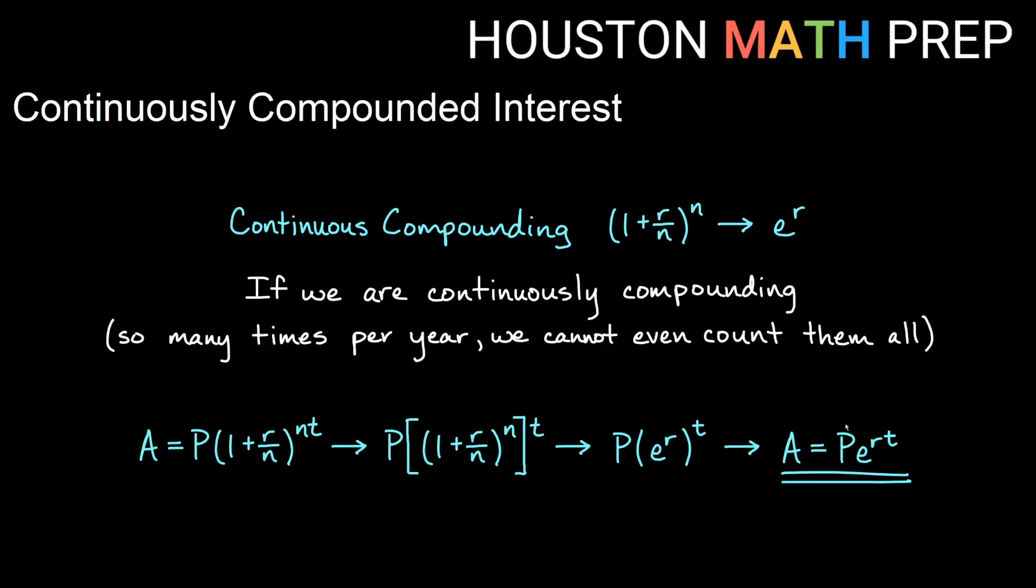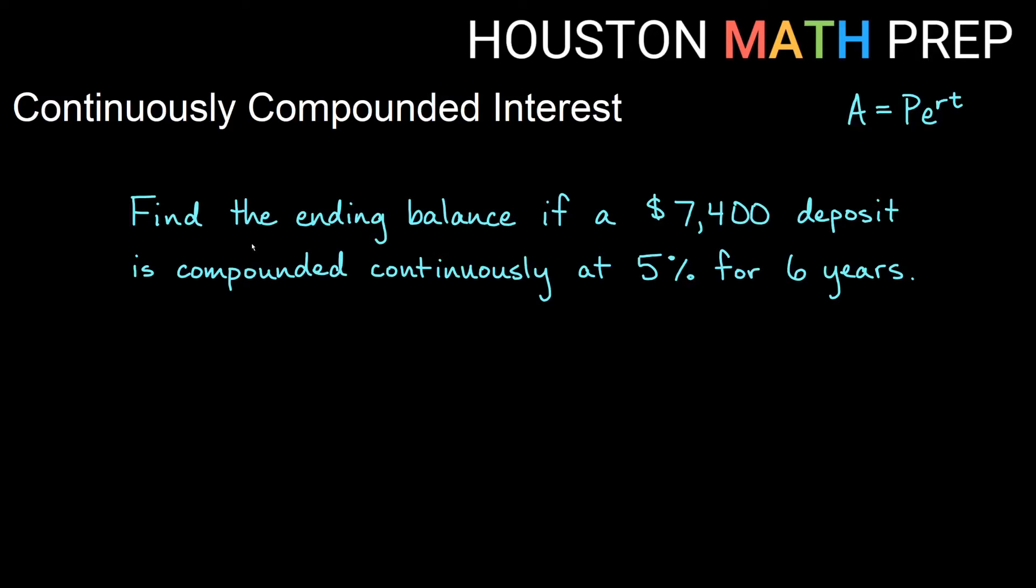So remember, P is just your starting amount, e is that natural exponential, the number that's about 2.71, r is going to be your interest rate as a decimal, and then t will be the amount of time, usually in years, unless specified otherwise. So let's do some work with continuous compounding here with interest.